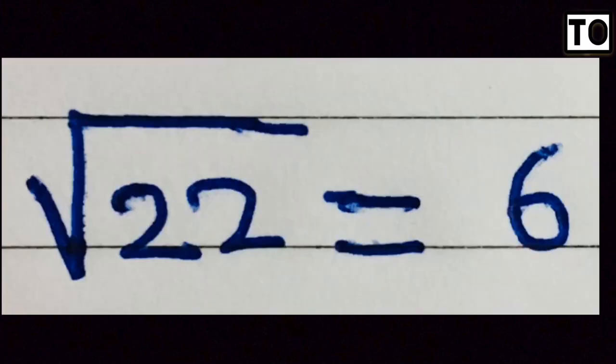If you want to talk about octal, its range is 0 to 7. That is because octal is base 8, so you have digits 0 to 7. We are going to write the range for each number system.